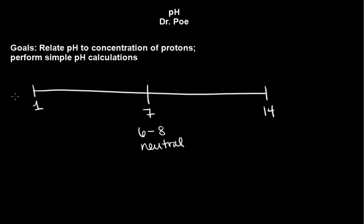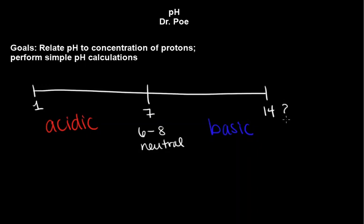On the low end, this is considered acidic — really less than 6, considerably less than 6. And on the high end, this is considered basic. But really, where did these numbers come from? Why 14? What is up with 7? What the heck is 1?